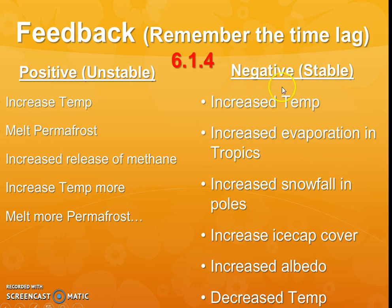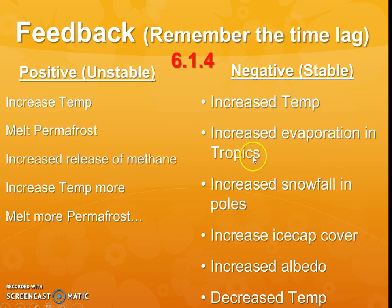Compare that to this negative or stable equilibrium example that relates to climate. With increased temperature, we will have increased evaporation, especially in the tropics but pretty much everywhere. Remember that evaporation is water going from liquid to gas. That increased evaporation will cause increased snowfall in the poles as long as the air and water are circulating in the atmosphere from where it's evaporating the most in the tropics, moving into the poles to become snowfall. Hopefully that snowfall will increase the ice caps and create more ice.